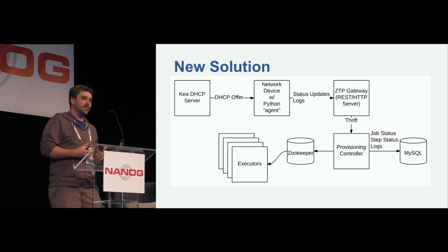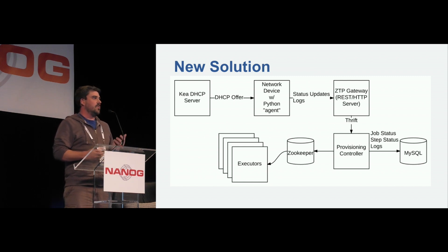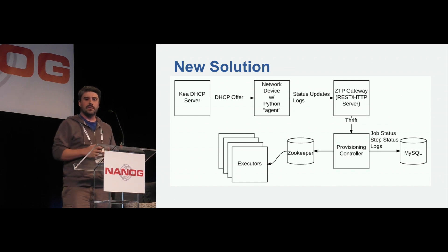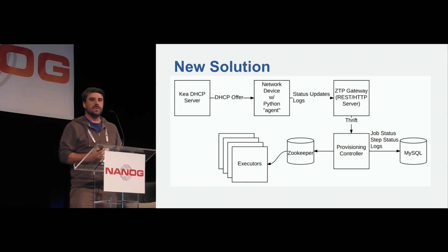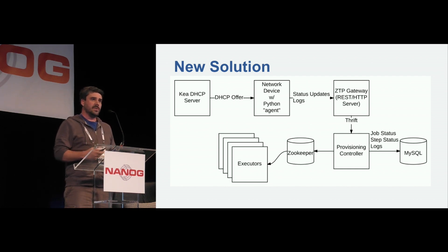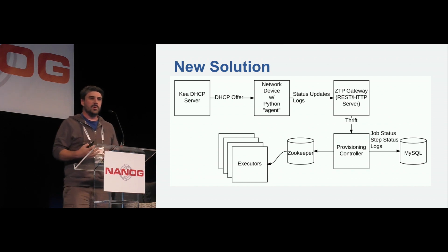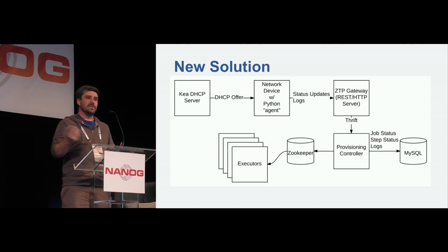The ZTP gateway is a simple REST gateway. The reason we're using REST is that we want the agent to be extremely lightweight — we don't want to package third-party dependencies. HTTP clients are part of the standard library in Python, so we just use urllib. There's also a controller that controls the entire job, handling interactions with the database to log messages and track current provisioning status. For everything not covered by ZTP — all the audits, checks, and additional steps — we created a queue-based system using Apache Zookeeper with executors that run steps as they come in.